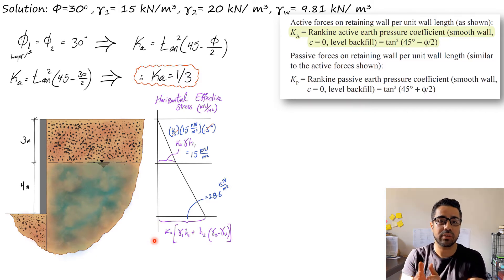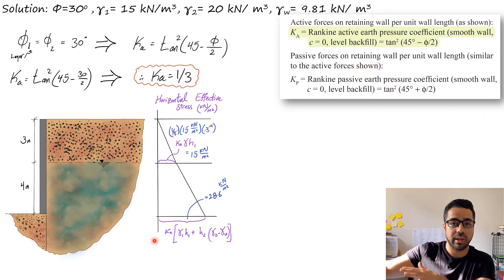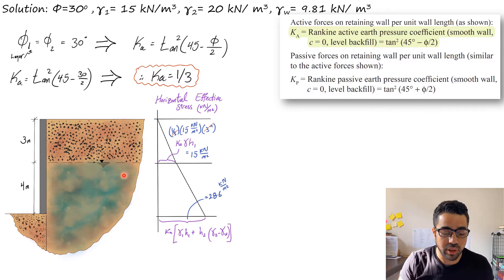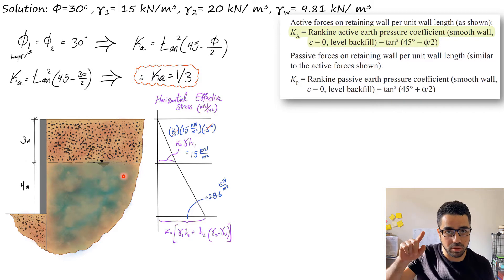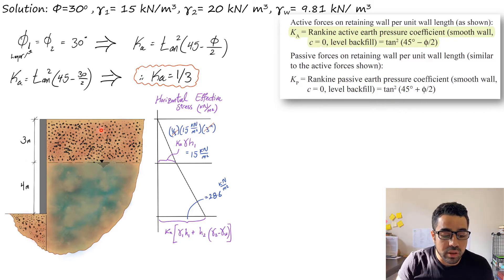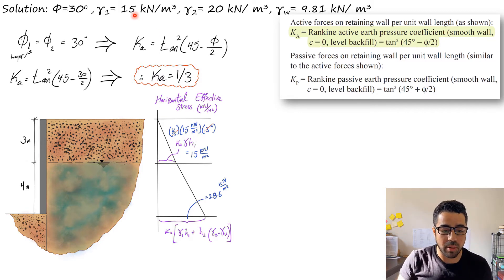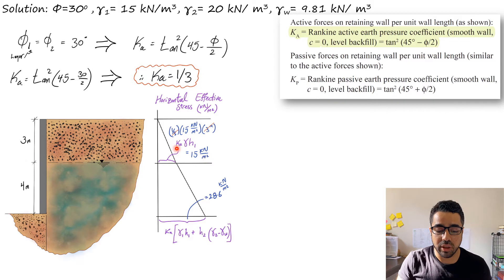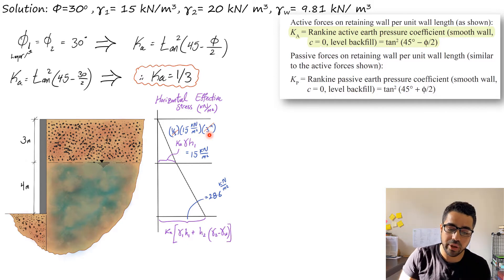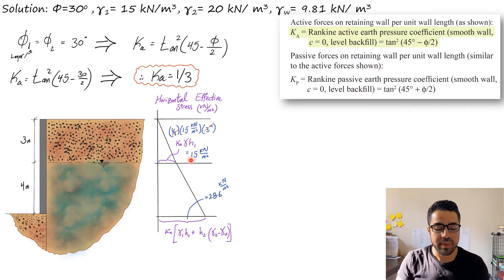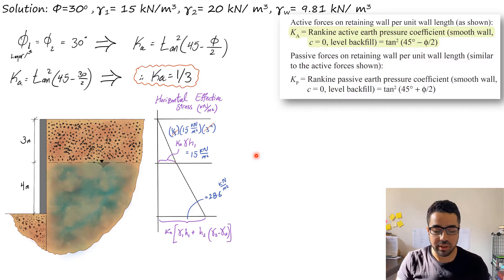Now we find the horizontal stress — it is simply the vertical stress times Ka. For the first layer, always use γ_effective = γ_total − γ_water. Since there is no water in the first layer, γ_effective equals γ_total. So: σh = γ1 × h1 × Ka = 15 × 3 × (1/3) = 15 kN/m². This gives us 15 kN/m² from the top down to the water table.